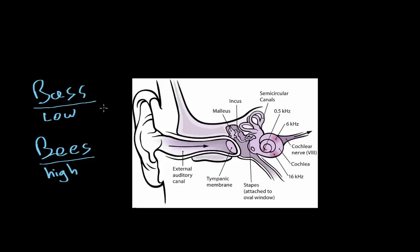As the information from a bass drum beating or a bee's wings flapping comes into the ear, it eventually hits the cochlea. We went into a lot of detail about how exactly the sound wave is converted into a neural impulse by the cochlea that eventually reaches the brain. Now we're going to go into how the cochlea distinguishes between sounds of varying frequencies and how this distinction is maintained all the way to the brain. This is known as auditory processing.